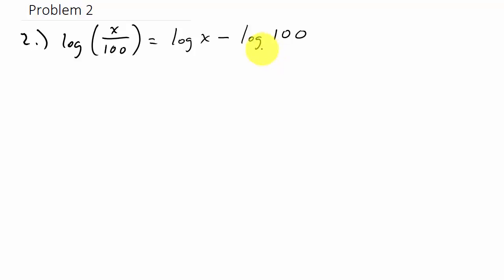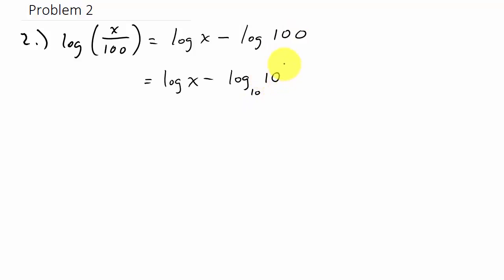If there's no base written, it's understood to be ten. So this is log X minus log base ten of one hundred. Now, can we rewrite one hundred as ten raised to a power? Yes — it's ten squared. Since the base of the log and the base of the exponential are both the same, our answer is the exponent. So that's log X minus two.